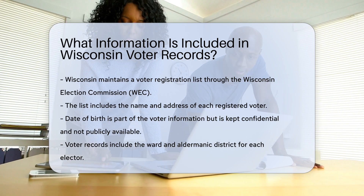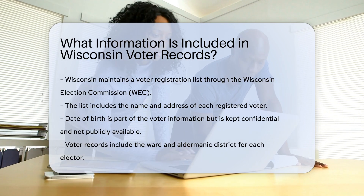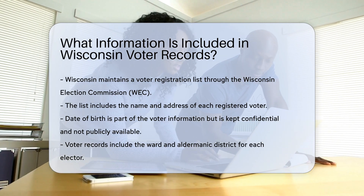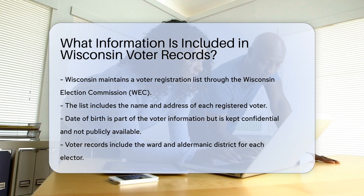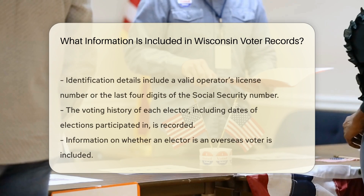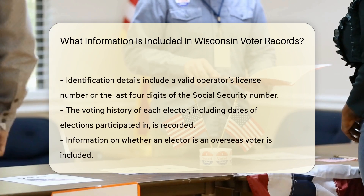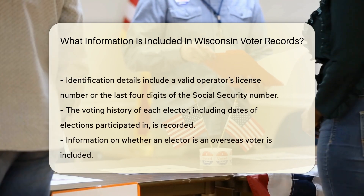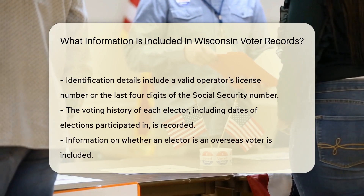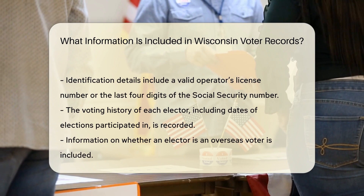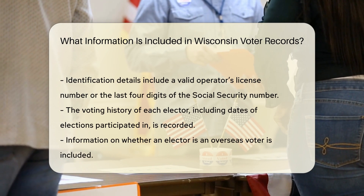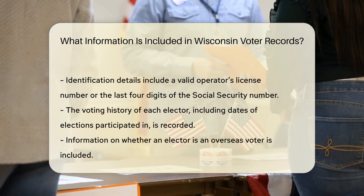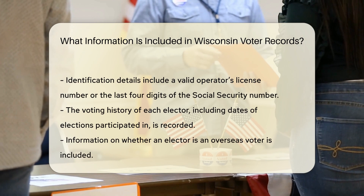Ward and Aldermanic District: the ward and aldermanic district of the elector are recorded. Identification: the number of a valid operator's license or the last four digits of the elector's Social Security number are included, along with any identification serial number issued by WEC.